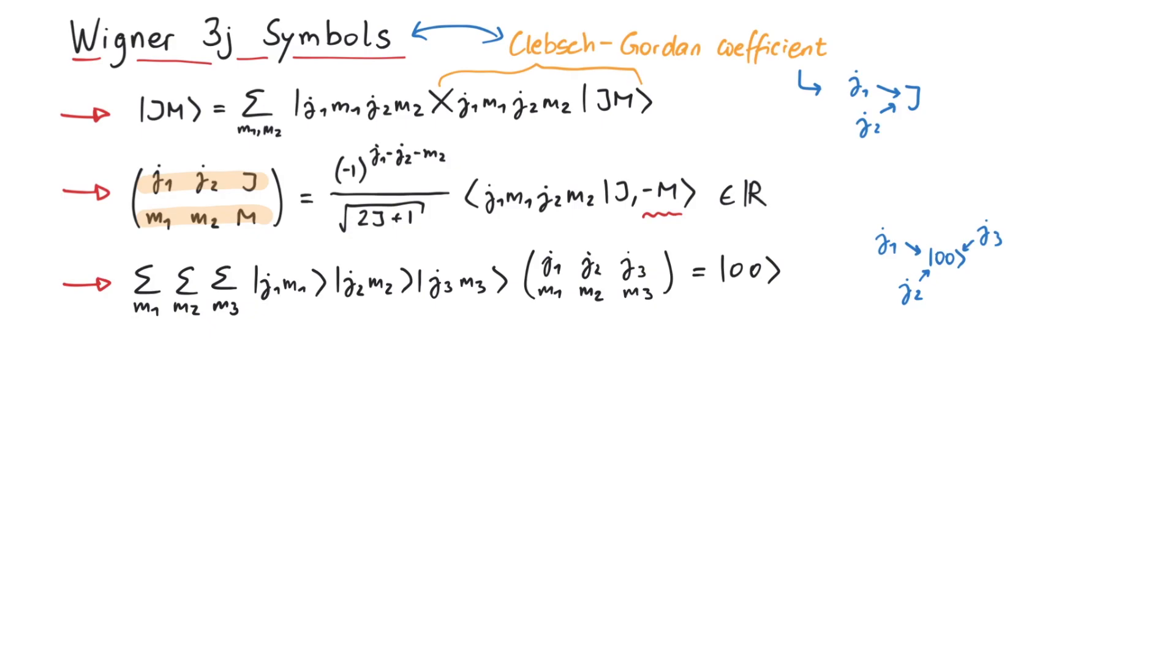Now that we have our definition in place, here are three useful rules to determine whether a 3j symbol exists, or if it's zero anyway. First, the values in the bottom row have to behave like magnetic quantum numbers to their respective angular momentum. For instance, if j1 is 2, then m1 cannot be 3, or one half.